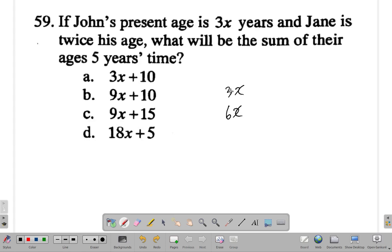And this is John's age. All right, John's age is 3x, Jane's age is 6x which is twice. In five years time, John will be 3x plus 5 and Jane will be 6x plus 5. Both of them will be five years older.